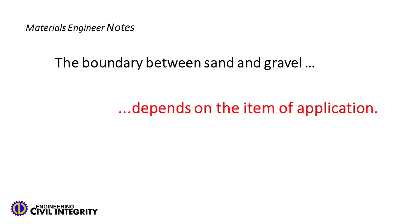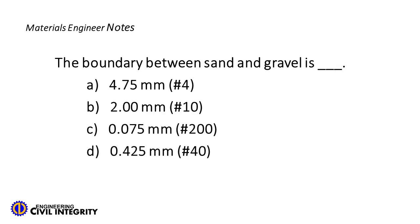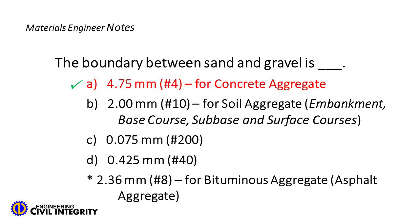The boundary between sand and gravel depends on the item of application. It is 4.75 millimeters (number four) for concrete aggregates, 2.00 millimeters (number ten) for soil aggregates — embankment, base course, sub-base, and surface courses — and 2.36 millimeters (number eight) for bituminous or asphalt aggregates.